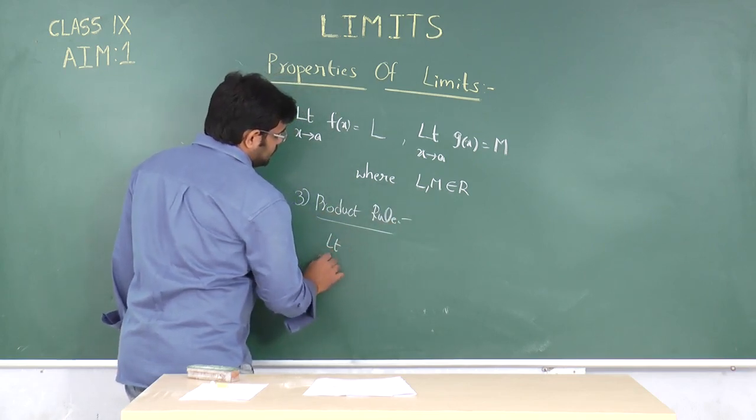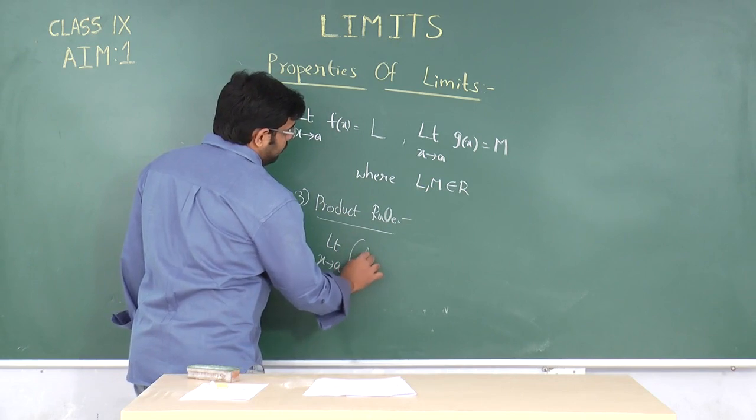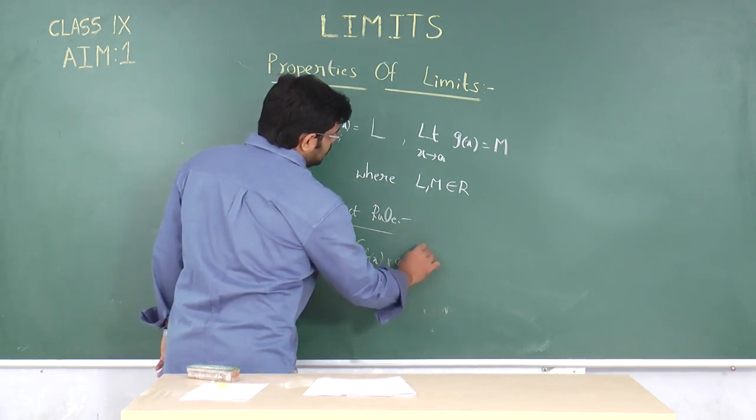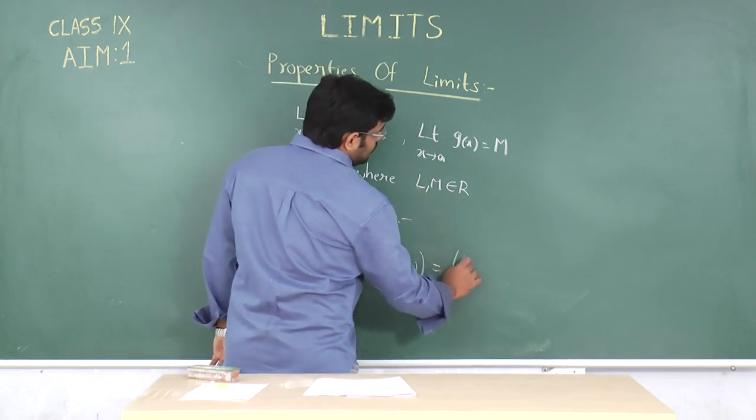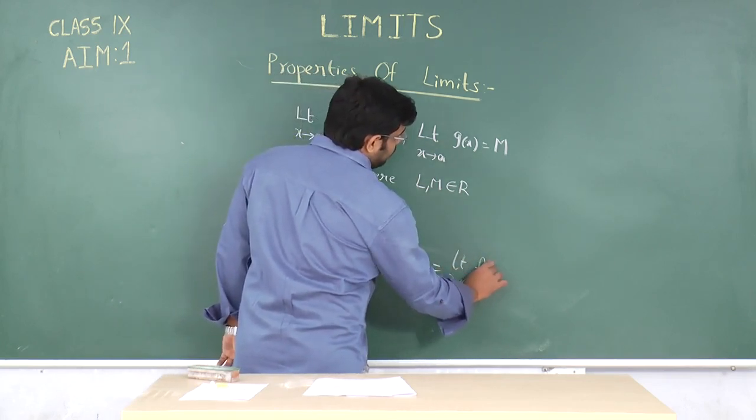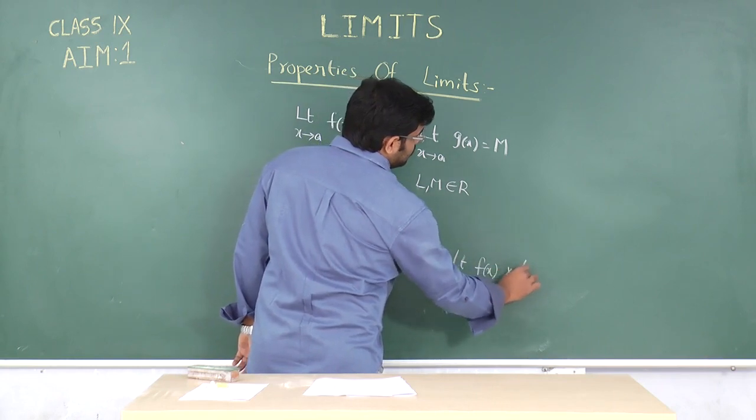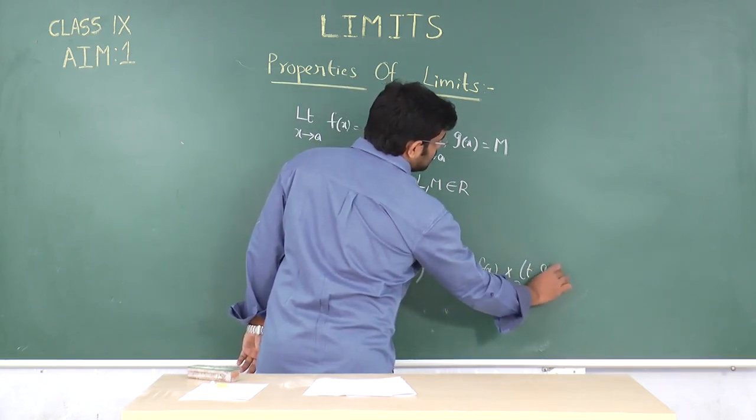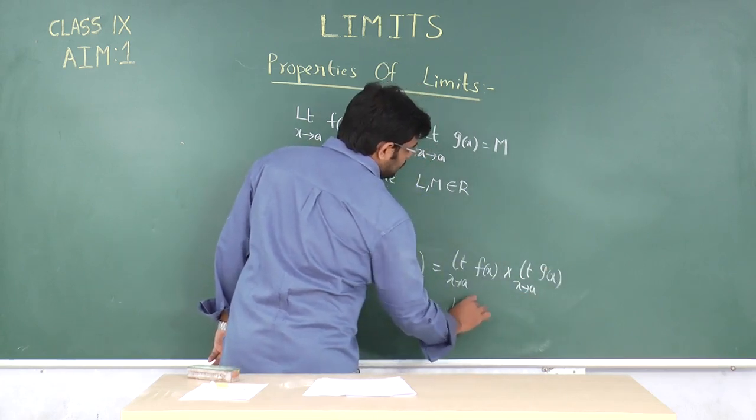Limit x tends to a, f of x into g of x is equal to limit x tends to a, f of x into limit x tends to a, g of x. That is equal to L into M.